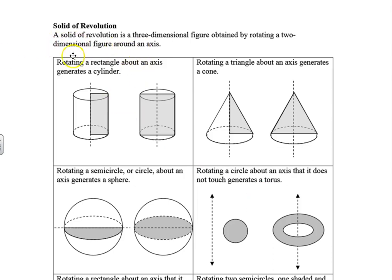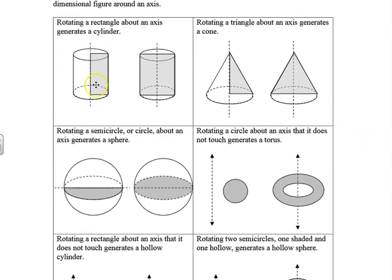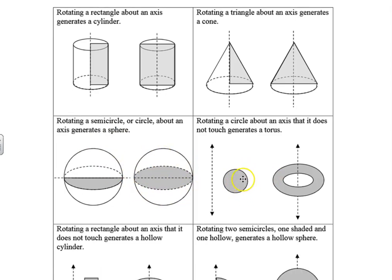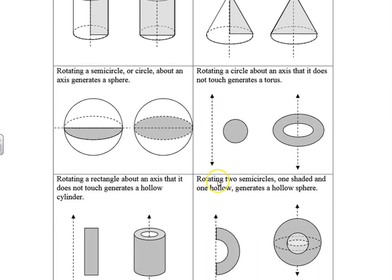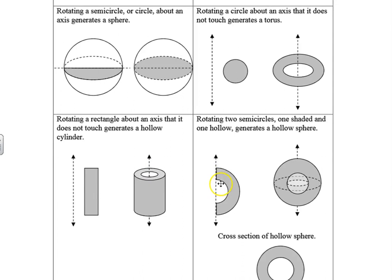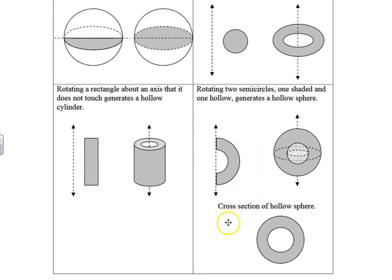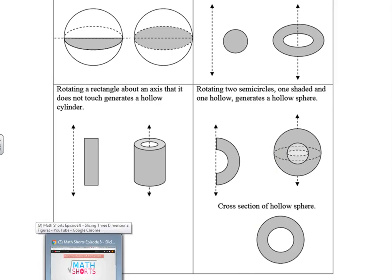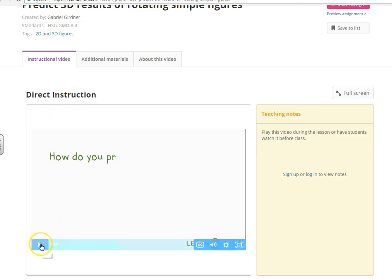The second concept is the solid of revolution — a three-dimensional figure obtained by rotating a two-dimensional figure around an axis. When you rotate a rectangle, it forms a cylinder; a triangle forms a cone; a circle or semicircle creates a sphere. A torus is formed when the circle doesn't touch the axis of rotation, and a rectangle away from the axis creates a hollow cylinder. I've got another quick video to show this in a more dynamic way.